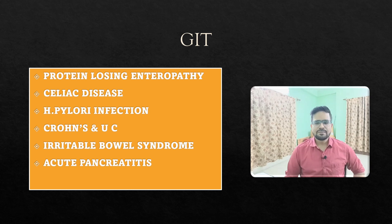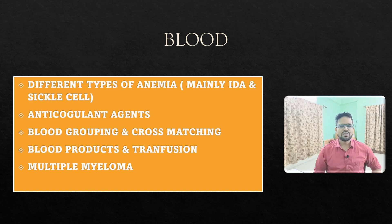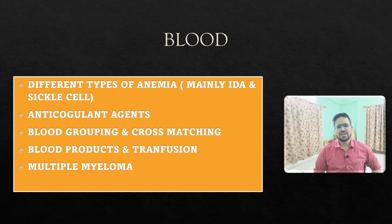For Blood, the important topics include: different types of anemia — mainly iron deficiency anemia and sickle cell anemia — leukemia, which has had one or two questions in the last five years, anticoagulant agents which are very important, blood grouping and cross-matching, blood transfusion and its complications, and multiple myeloma. These five topics from the Blood chapter will definitely yield questions.